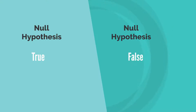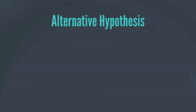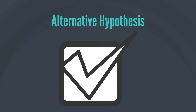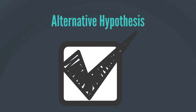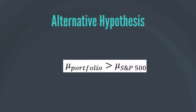When such evidence is present, we are led to the alternative hypothesis. The alternative hypothesis is the hypothesis accepted when the null hypothesis is rejected. So in our example, the alternate hypothesis is that the mean return on the portfolio is greater than the mean return on the S&P 500 index. The alternative hypothesis is denoted by H with a subscript of A, and we can write our alternate hypothesis as: mu portfolio greater than mu S&P 500.